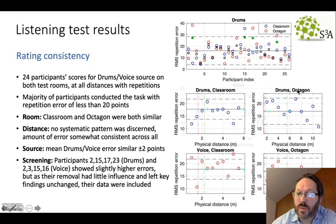Breaking it down across the classroom and the octagon, we saw quite similar patterns of error in both cases. And looking at distance, we saw no systematic pattern and were pleased that the error was rather consistent across all distance measurements. In terms of source, the drums and the voice were generally similar. There were variations of plus or minus one or two points in the overall summary statistic. But we also found that a few participants, such as these highlighted in green at the top here, did report higher errors. And so we investigated whether removing those, screening those participants out of the data analysis affected the results. But actually, they had very little influence overall on the key findings. And so we've left all of those in in the following analysis.